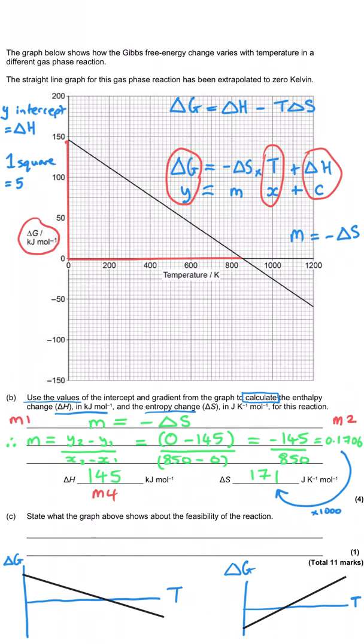And then the final question here says, state what the graph shows about the feasibility of the reaction. Well, remember, as I mentioned earlier, the feasibility of the reaction depends on the sign of the delta G. And so if delta G is less than or equal to zero, this reaction will be feasible and spontaneous. And so this region over here, delta G is positive. So the reaction is not feasible at this temperature from zero kelvin, absolute zero, all the way up to about 850, 845 kelvin or so. And so what we need to say here then is that this reaction becomes feasible at this value of 850 or so and above. And so you could say either this reaction is feasible at temperatures equal to or greater than 845 kelvin or temperatures less than 845 kelvin, it will not be feasible. Either of those angles of approach, absolutely fine.